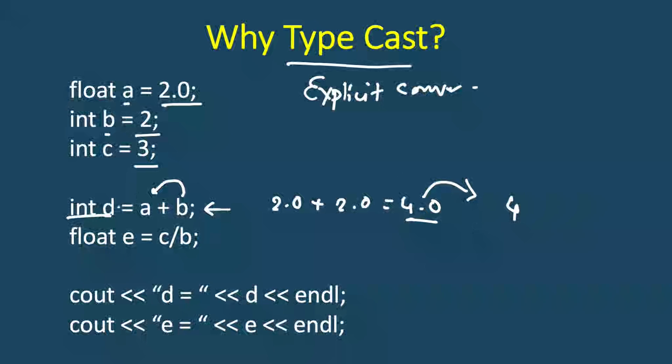So here there is no problem, but let's take another example. This d when we print it will give 4. But here let's say we divide c by b, so c is an int, b is also an int. So before assigning the result to this e, both the data types are integer, so the calculation will be done as integer and it will be 1.